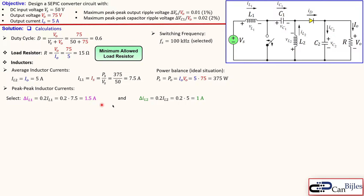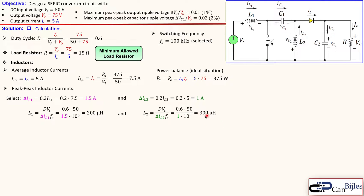Now I have ΔI_L1 and ΔI_L2. Using the ripple current formulas for the inductors and solving for the inductor values: L1 uses the duty cycle, input voltage, selected ripple current, and switching frequency, resulting in exactly 200 µH. Similarly for L2, the values give 300 µH. We need to check later that this is in continuous conduction mode, as we have assumed that to be the case. We will verify that after the analysis.